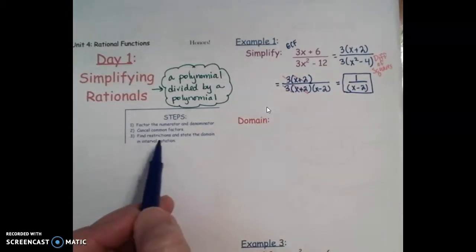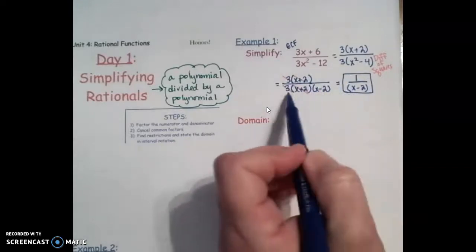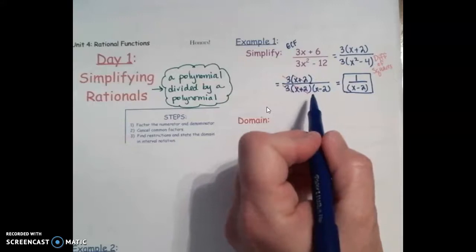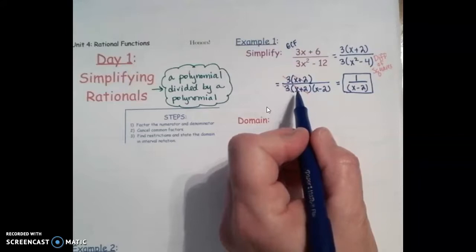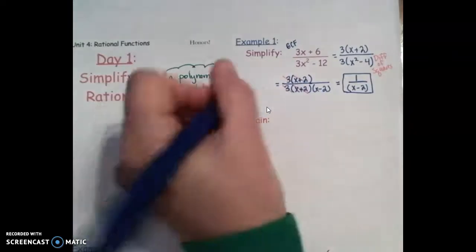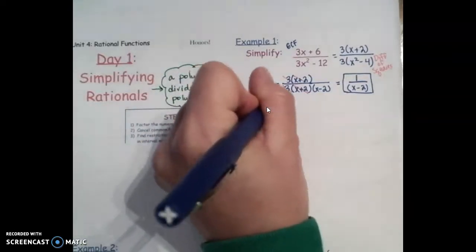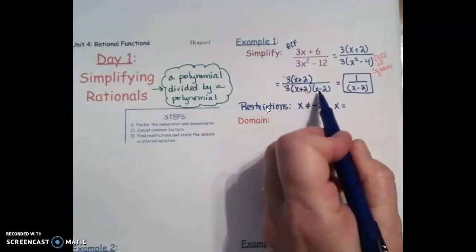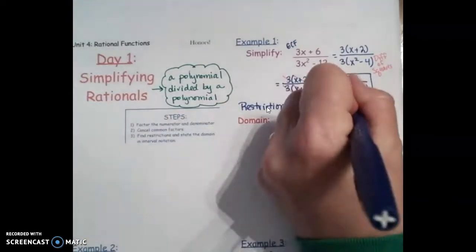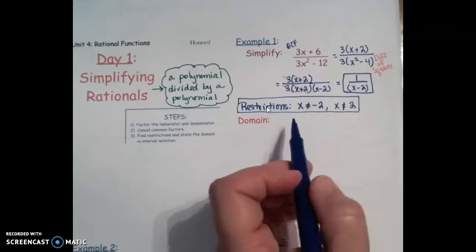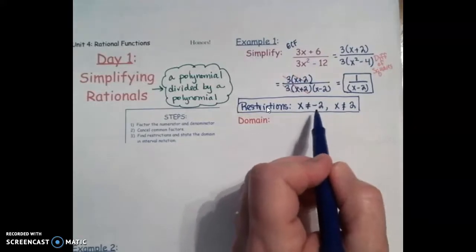Now we need to do Step 3: find restrictions and state the domain in interval notation. When you look at your restrictions, you need to look at the domain in factored form. So I'm going to look right here to find our restrictions, and the restrictions are anything that would make your denominator be zero. If I put a negative 2 in the place of this x, that would be negative 2 plus 2 is 0, which would make the whole bottom become 0. And we all know we can't divide by 0. So x cannot be negative 2.